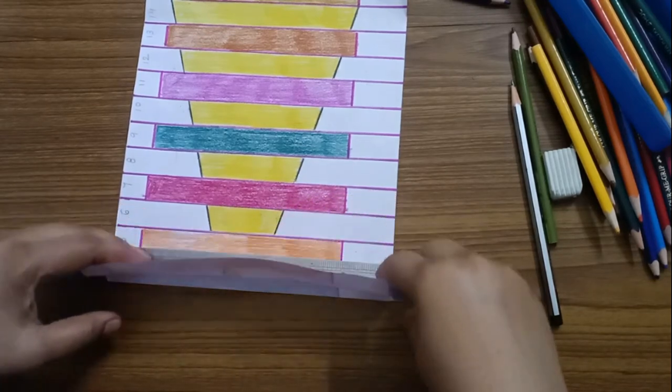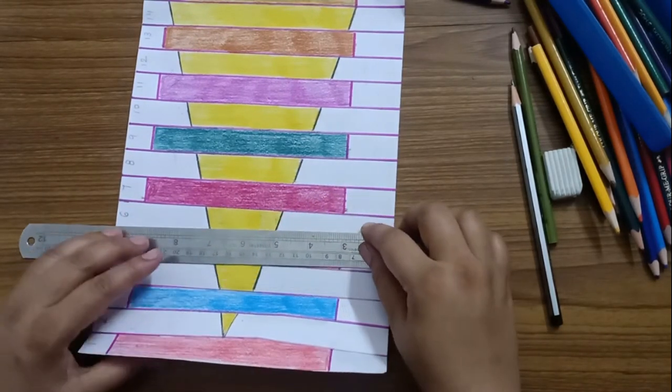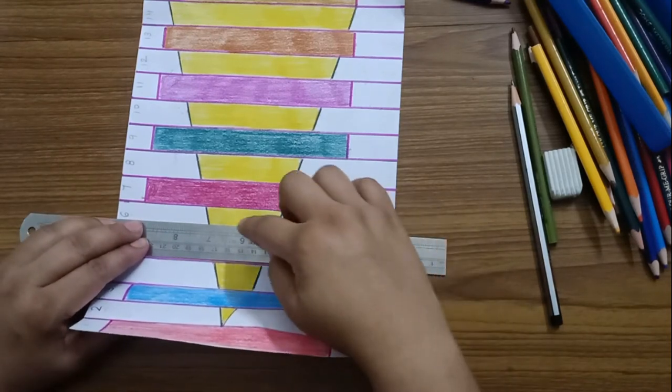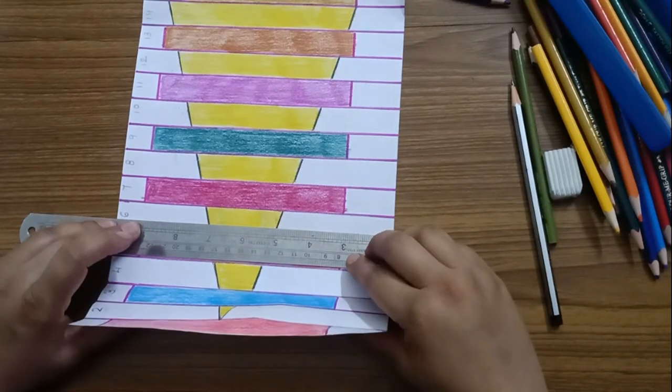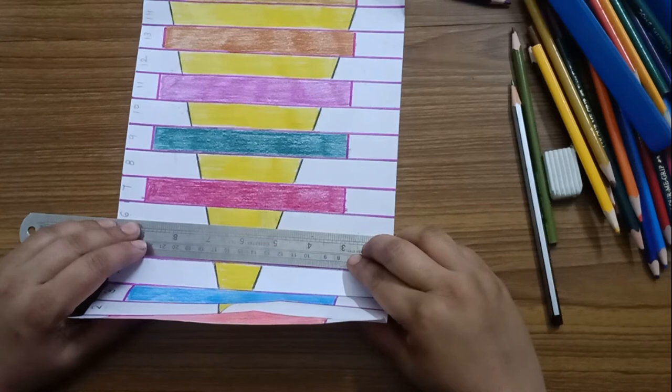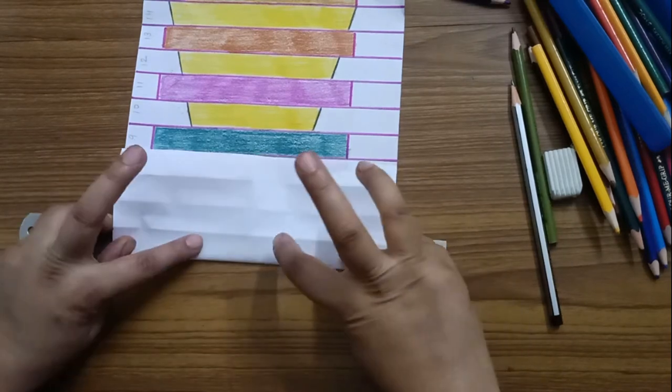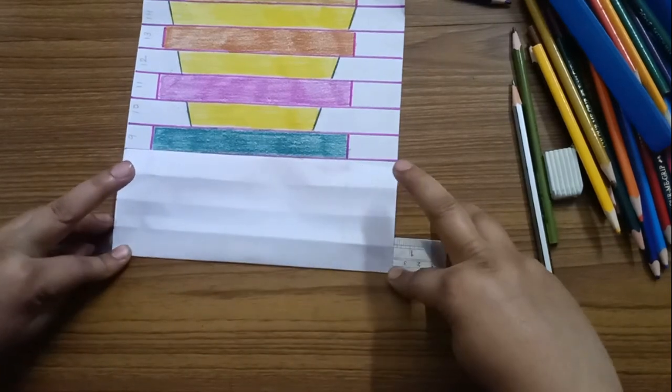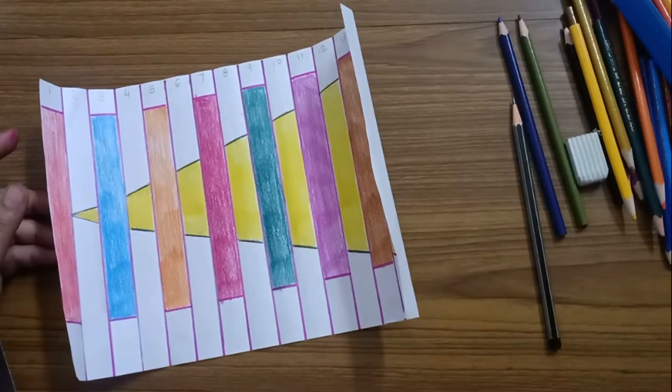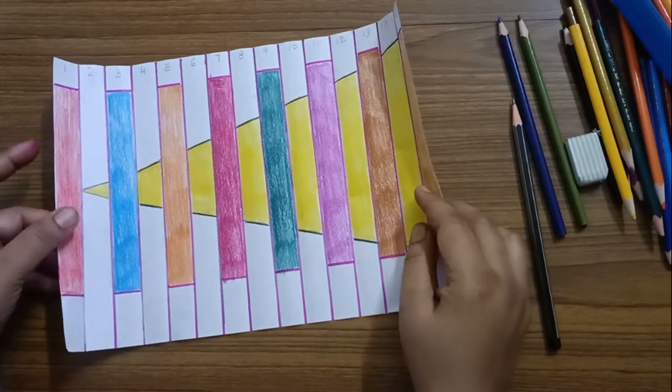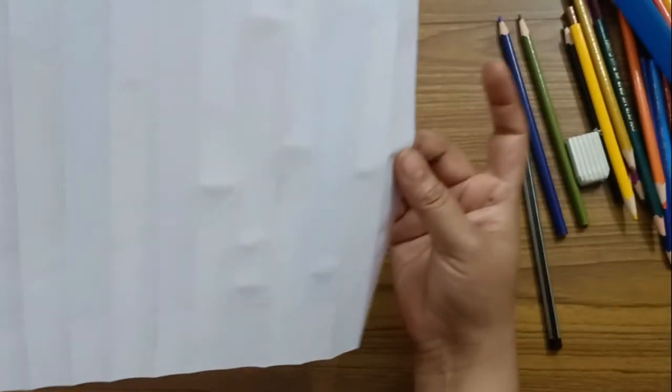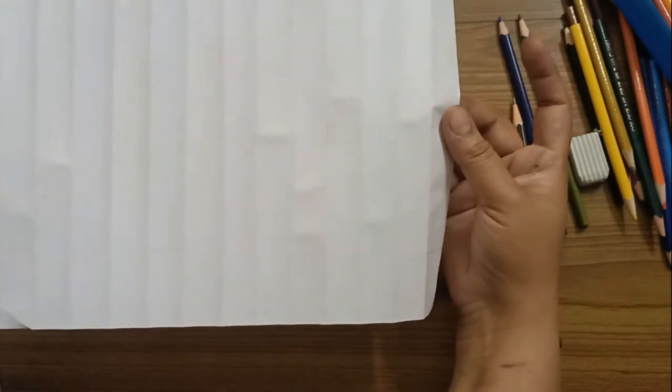You have to fold where we have drawn a line. Like this. Nice and easy. So, after making fold, the paper will look like this. If you can see it, we have a fold like this.